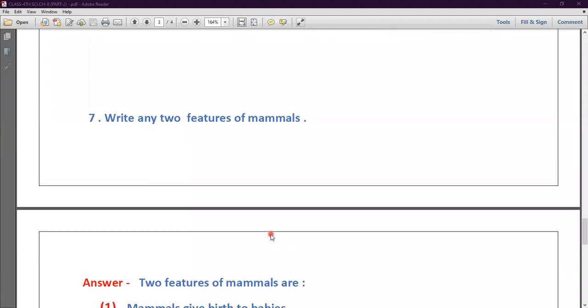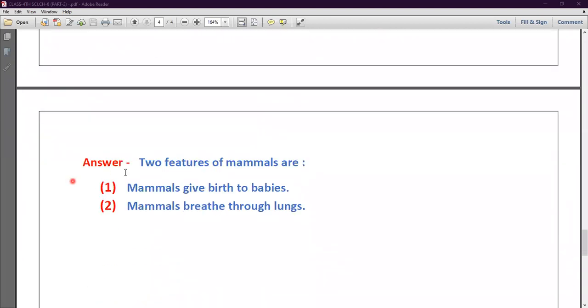Now next question number seven is write any two features of mammals. So answer is two features of mammals are: mammals give birth to babies, and mammals breathe through lungs.